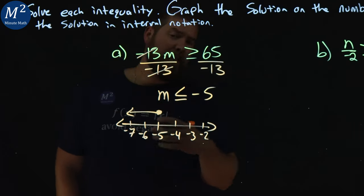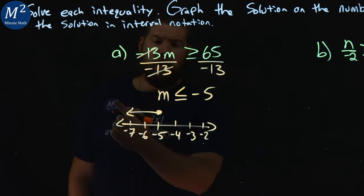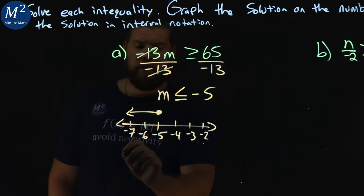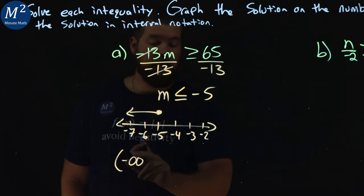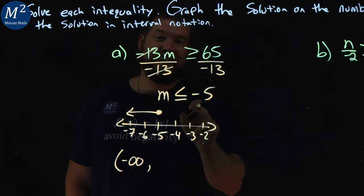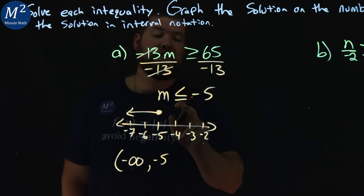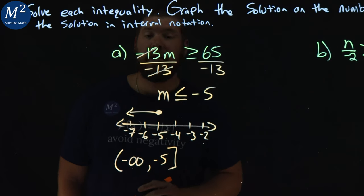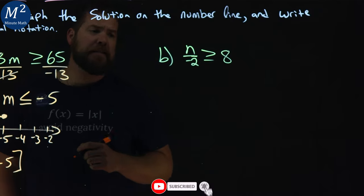Now we want to write this in interval notation. What's the lowest value that m can be? Well, it's all the way to the left, that's negative infinity. Make sure you put a parenthesis for negative infinity. We can go all the way up to negative 5. So negative 5 is the upper bound, but since we can equal it, we put a bracket. Not too bad. Let's dive into the next example.